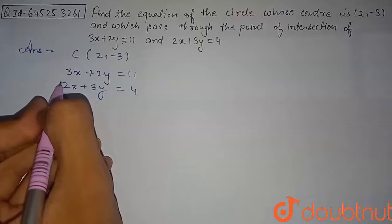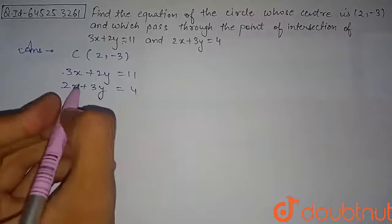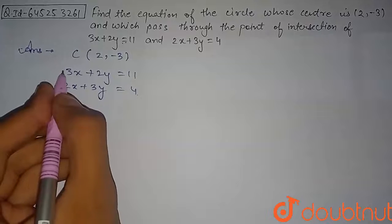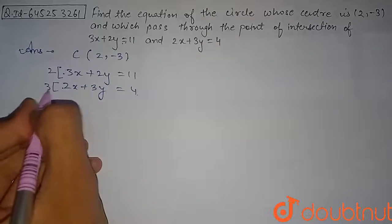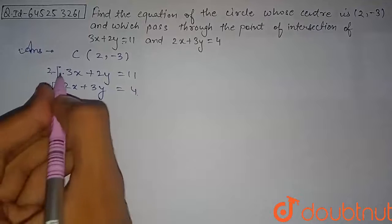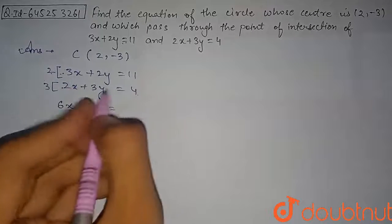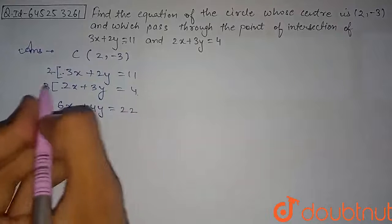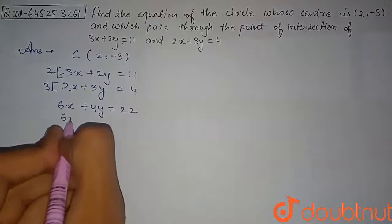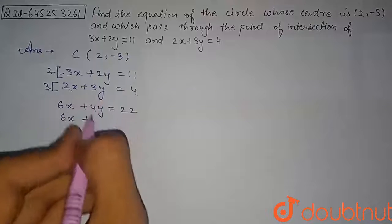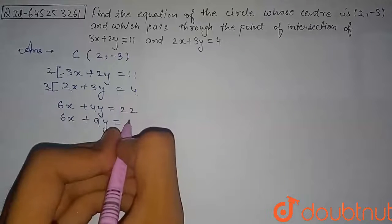We will multiply the first equation by 2 and the second by 3 to make the coefficients of x the same. This gives 6x + 4y = 22 for the first equation, and 6x + 9y = 12 for the second equation.